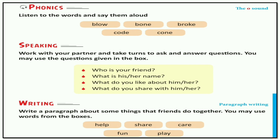Speaking - work with your partner and take turns to ask and answer questions. You may use the questions given in the box: Who is your friend? What is her name? What do you like about him or her? What do you share with him or her? You have to ask this portion to your siblings and friends also.